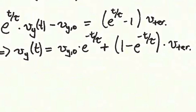Bringing it all together, e to the t over tau times vy of t minus the initial velocity vy of 0 equals the terminal velocity times the quantity e to the t over tau minus 1. Solving for vy of t, we get vy of t equals the initial velocity times an exponential factor plus 1 minus that exponential factor, all times the terminal velocity. This has some really interesting consequences for the way the velocity evolves with time.